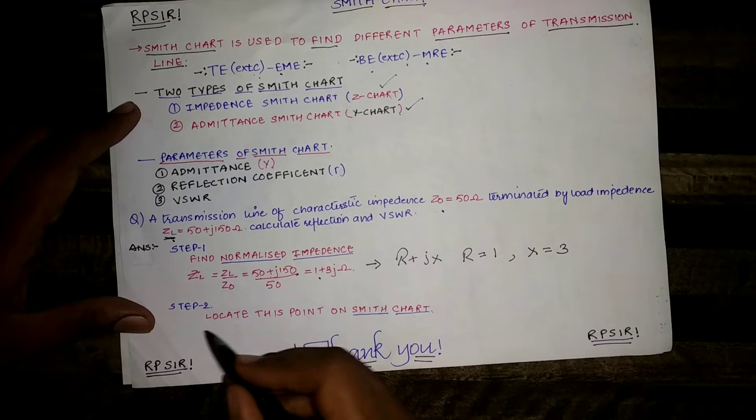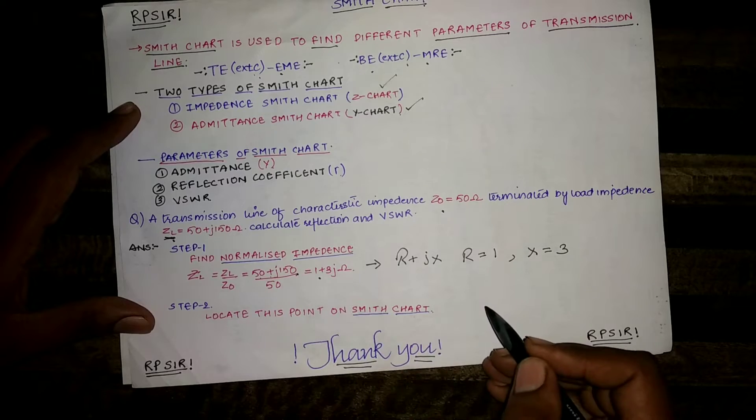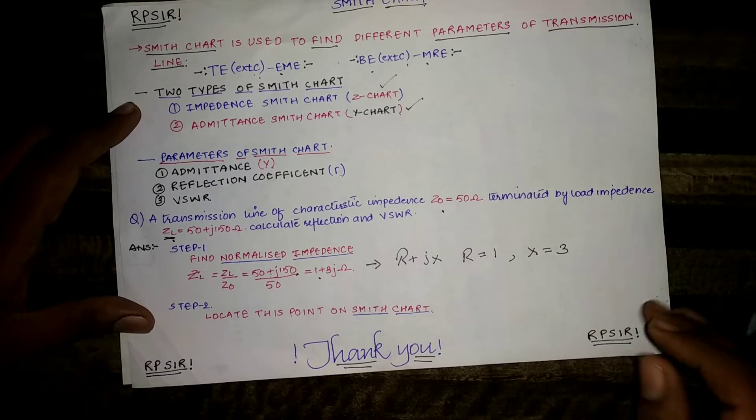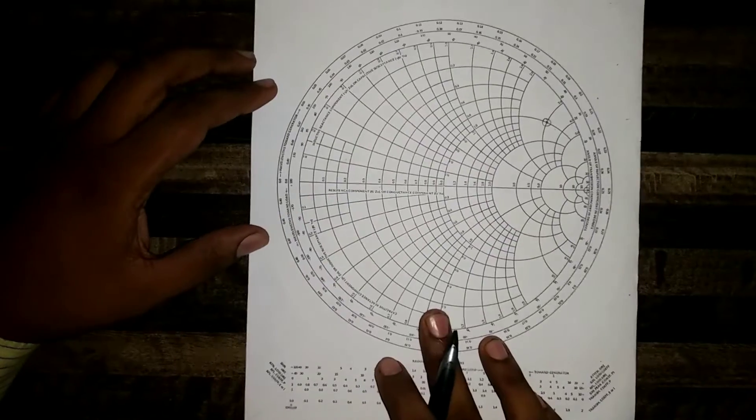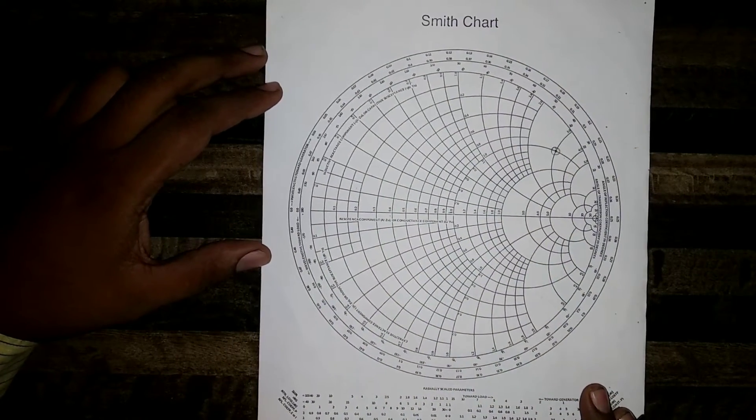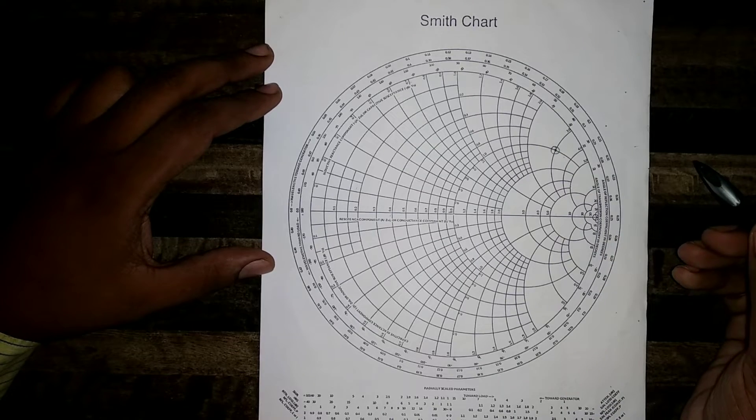Step number two is to locate this point on Smith chart. Now this is my Smith chart. This is Z Smith chart.